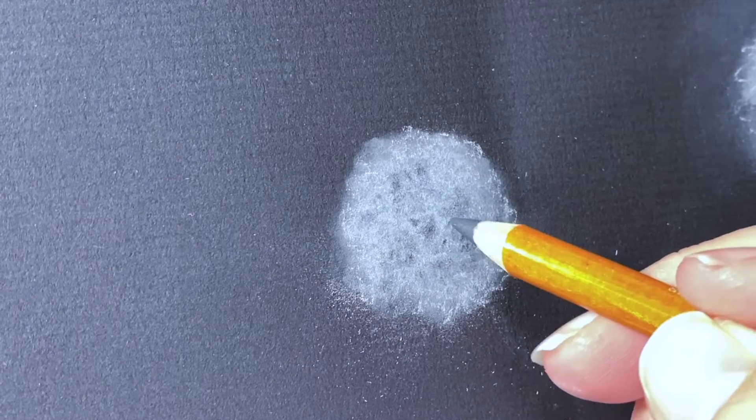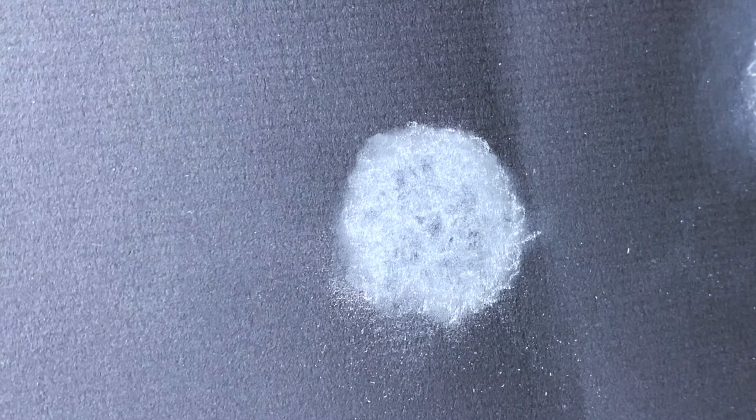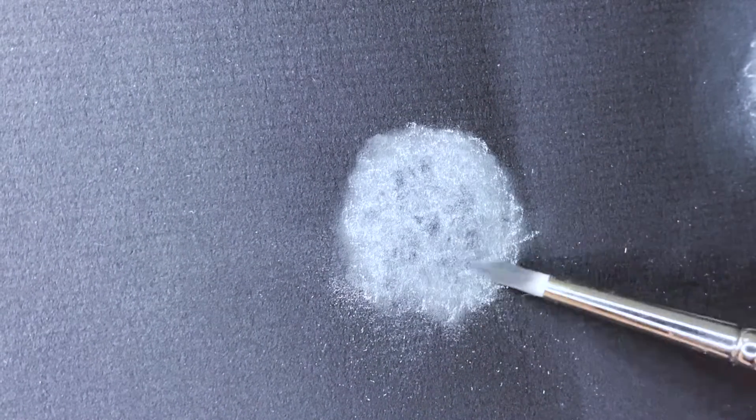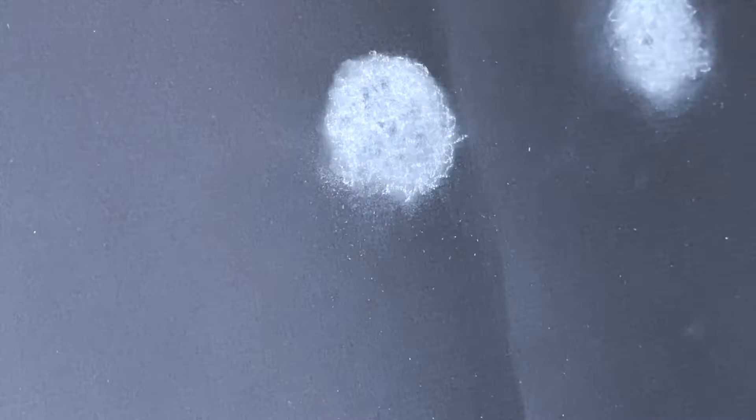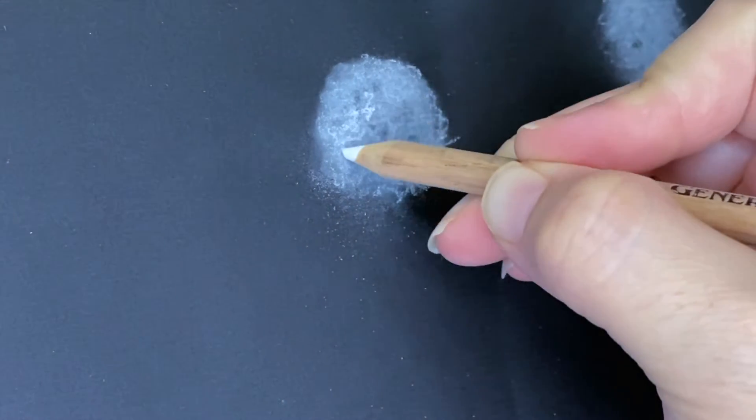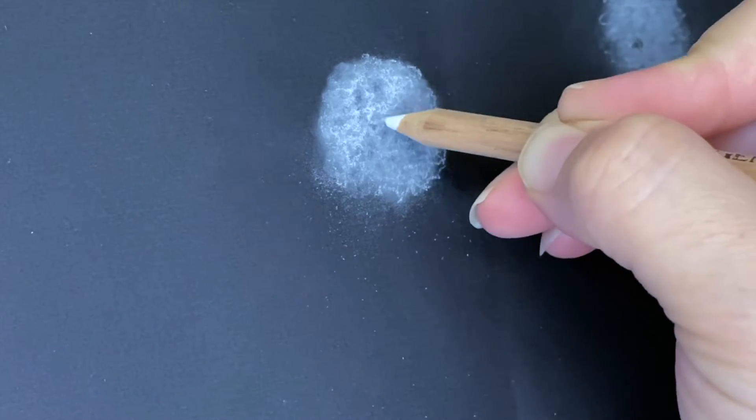If I needed to darken anything or if there was a pore that I would see, I would go in with my charcoal pencil and just dab some of the medium on there and smooth that out. It would darken the area without putting too much of the black charcoal on there.